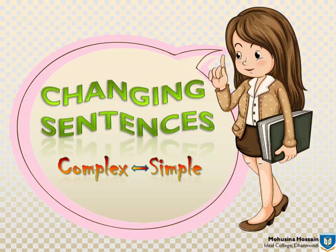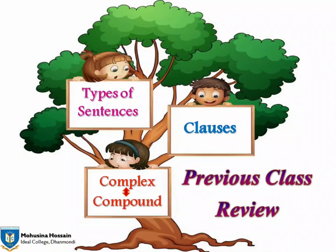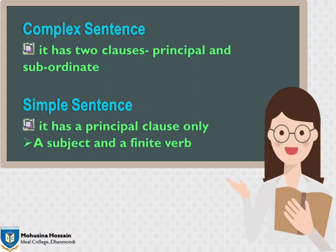তার আগে চলো briefly দেখে নেই আজকে। Previous class এ আমরা কী কী বিষয়গুলো সম্পর্কে জেনে ছিলাম। গত ক্লাসে আমরা, exam এর সময় Changing Sentences এ যে যে sentences গুলো দেখতে পাই, অর্থাৎ types of sentences এটা নিয়ে আলোচনা করে ছিলাম। Secondly, Principal Clause, Subordinate Clause, and Coordinate Clause সম্পর্কে জেনে ছিলাম। আর lastly, Complex থেকে Compound এর Rules and Examples নিয়ে আলোচনা করে ছিলাম। আজ আমরা Complex থেকে Simple এবং Simple থেকে Complex করা সম্পর্কে জানবো। সো চলো জেনে নেই, What is Complex Sentence and What is Simple Sentence?